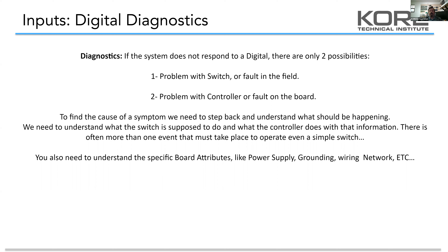With a digital input for a control system, there are really only two possibilities in a failure mode: there's either a problem with the switch or a problem in the field — the wiring — or the controller itself is unable to read its own output and consequently its own back input. With all of our inputs and outputs, you have to understand what the controller is actually asking the system to do. It's imperative that you know the sequence of operation for anything we're working on. There are several variables beyond just the circuit board that can prevent the control system from doing its job.